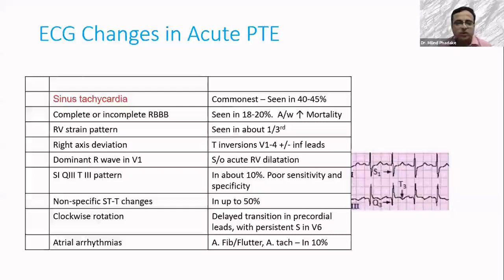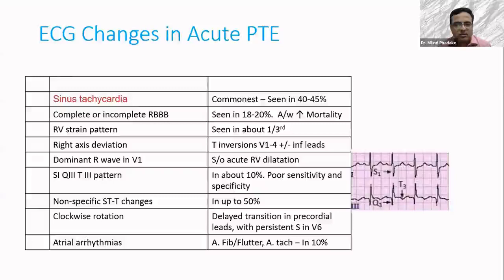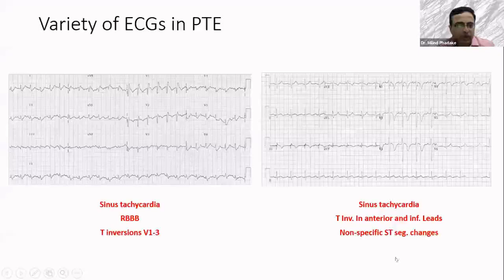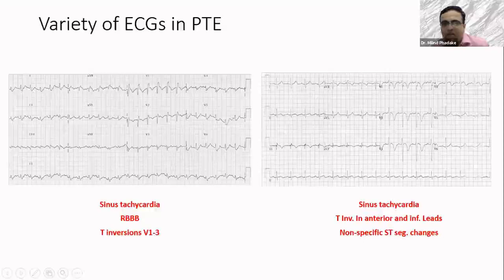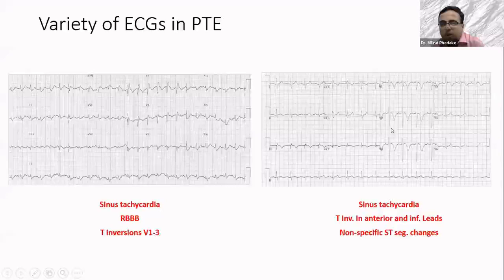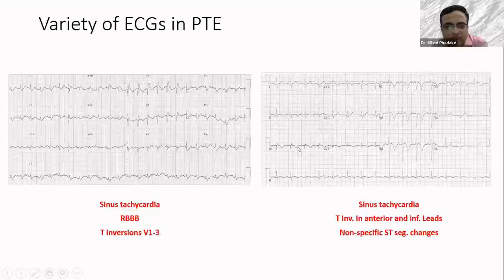The commonest ECG change in pulmonary embolism is sinus tachycardia. Then signs of RV strain or RA dilatation like RBBB, strain pattern, right axis deviation, or prominent R wave in lead V1. The S1-Q3-T3 pattern is seen in only about 10-15% of patients — sensitivity and specificity are quite poor. One ECG shows sinus tachycardia with RBBB-like pattern and T inversions in V1, V2 — easy to miss. Another ECG shows deep T inversions up to lead V4 with tachycardia — commonly diagnosed as anterior wall ischemia with pulmonary embolism missed. Another shows right axis deviation with a prominent R wave in V1. One very important sign with high sensitivity and specificity: T inversion in both lead V1 and lead V3 together with sinus tachycardia — suspect pulmonary embolism.